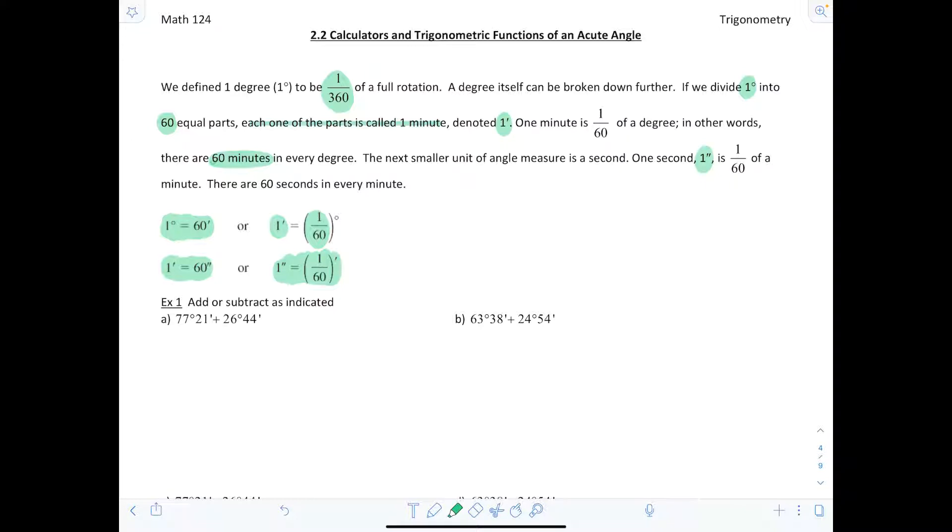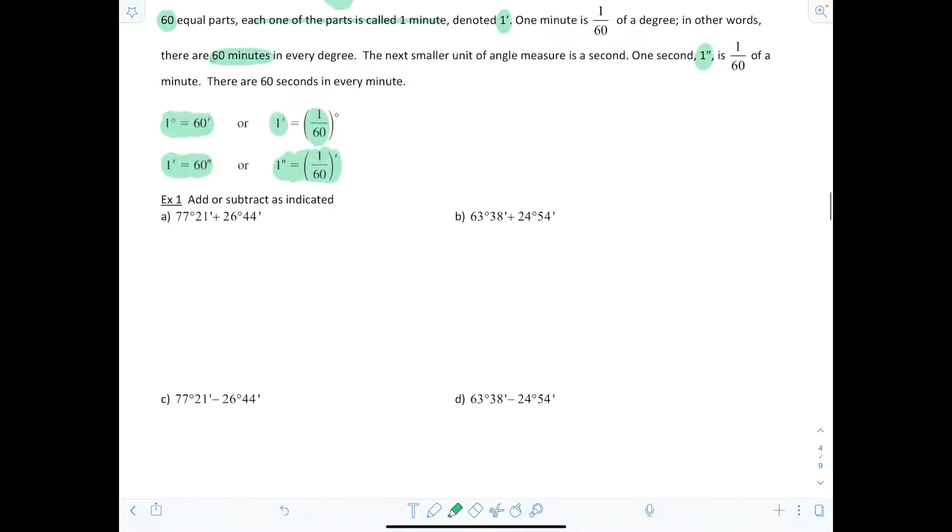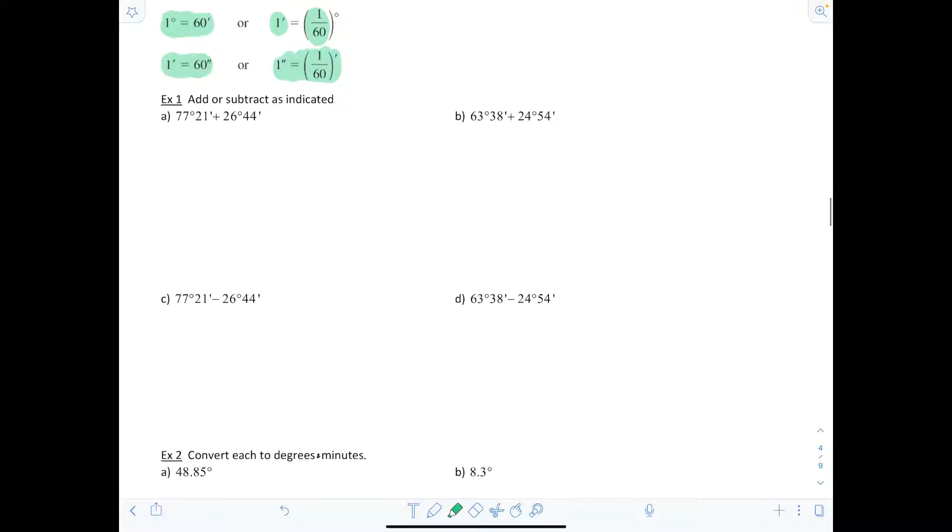Add or subtract as indicated. Here we have 77 degrees and 21 minutes plus 26 degrees and 44 minutes. I'm going to add the degree portion together and the minute portion together. 77 plus 26 gives me 103 degrees, then I add 21 minutes and 44 minutes, which gives us 65 minutes.